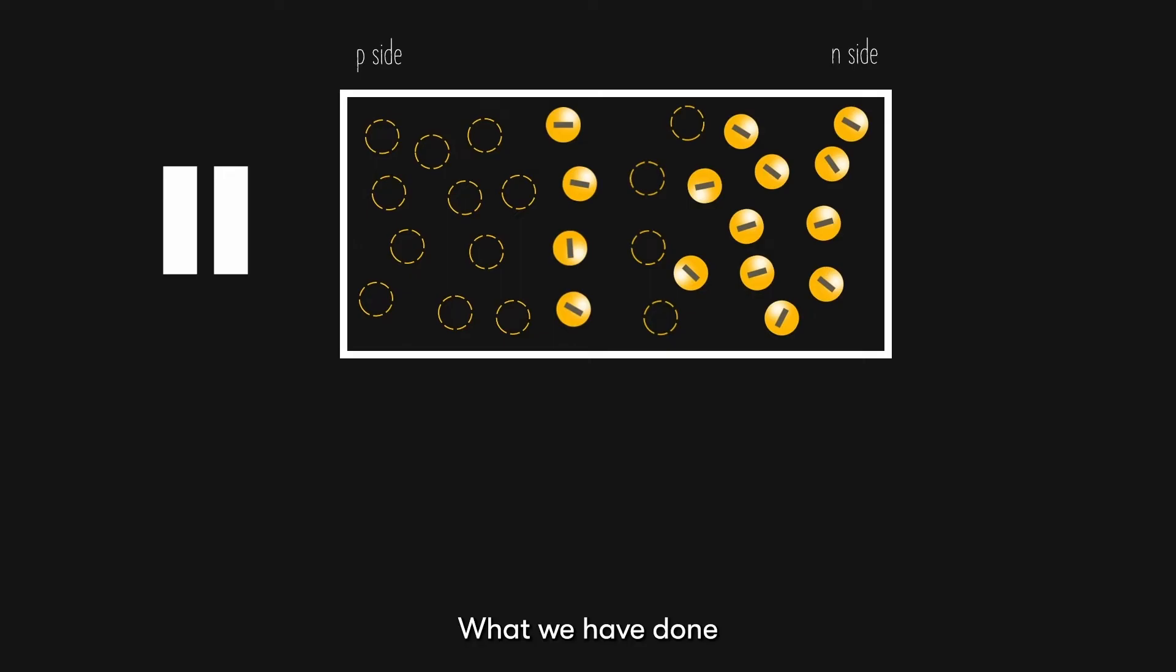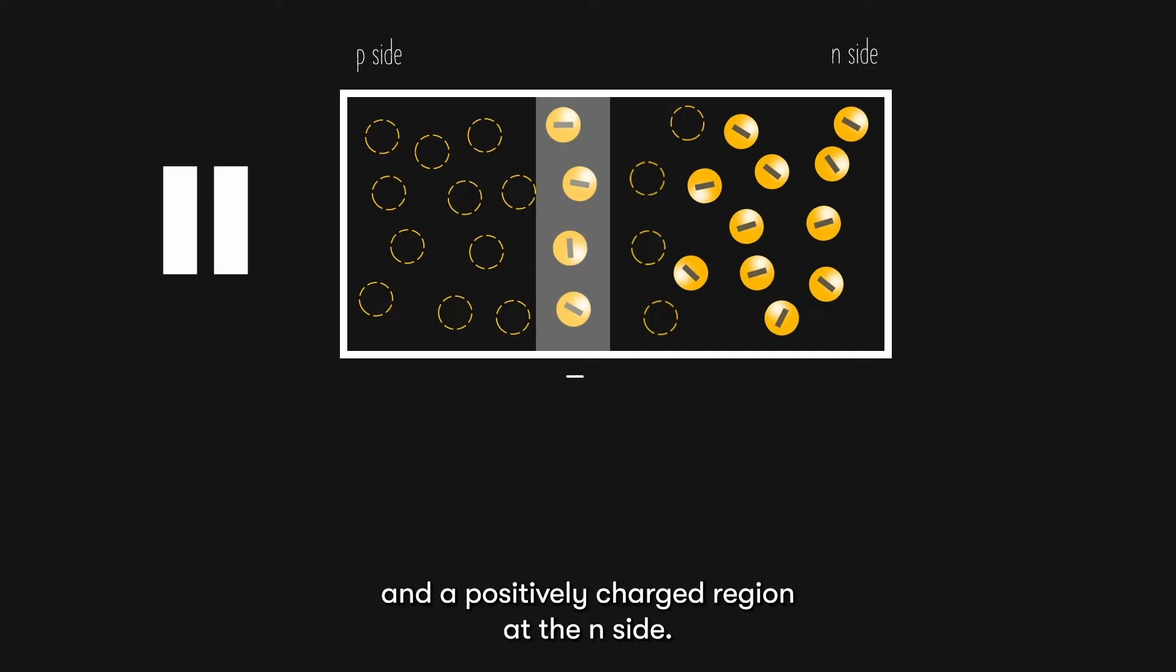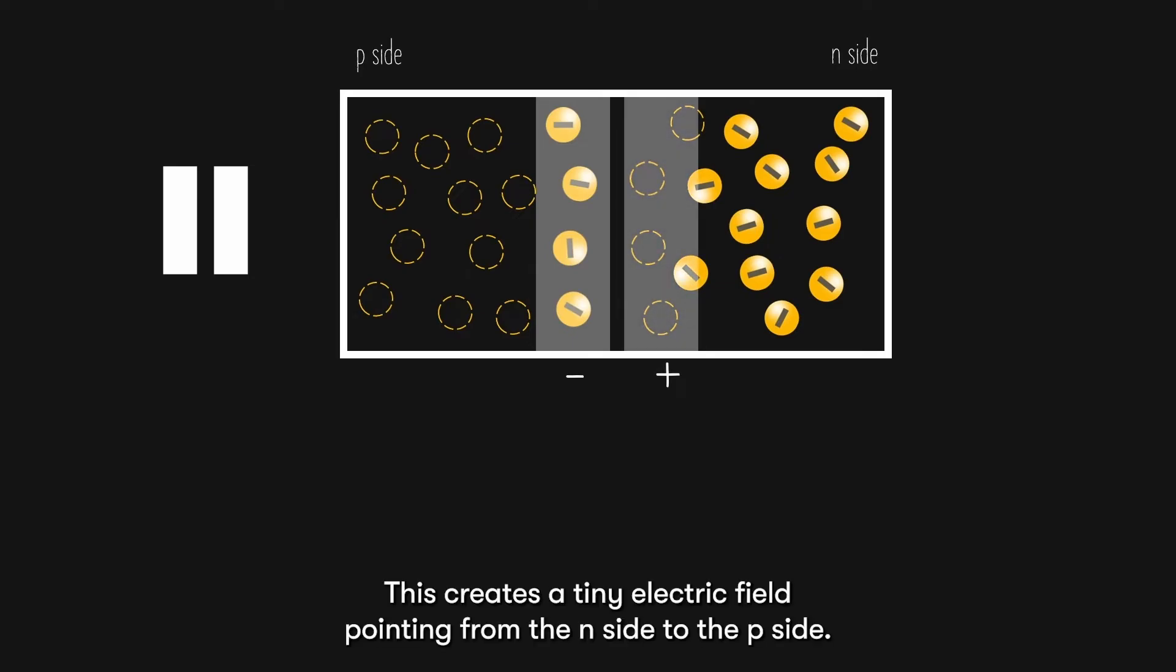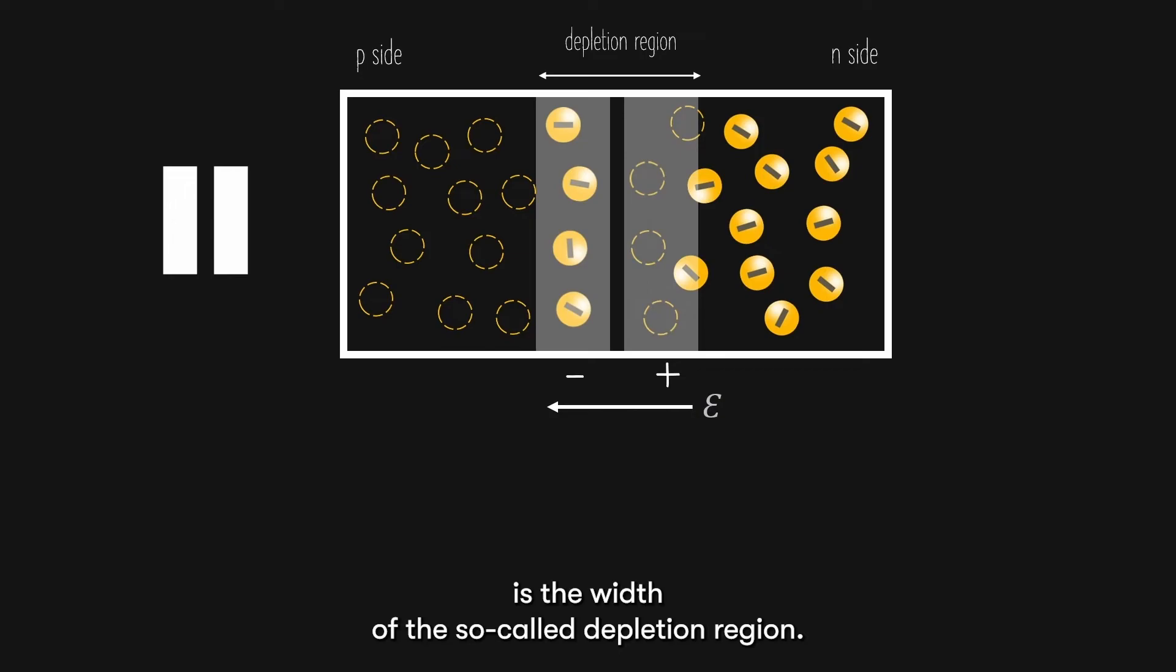What we have done is that we created a negatively charged region at the p-side, and a positively charged region at the n-side. This creates a tiny electric field pointing from the n-side to the p-side. The width where this electric field takes place is the width of the so-called depletion region.